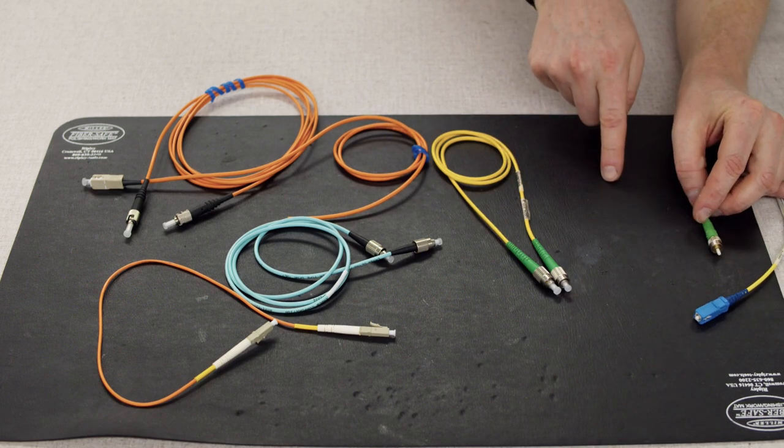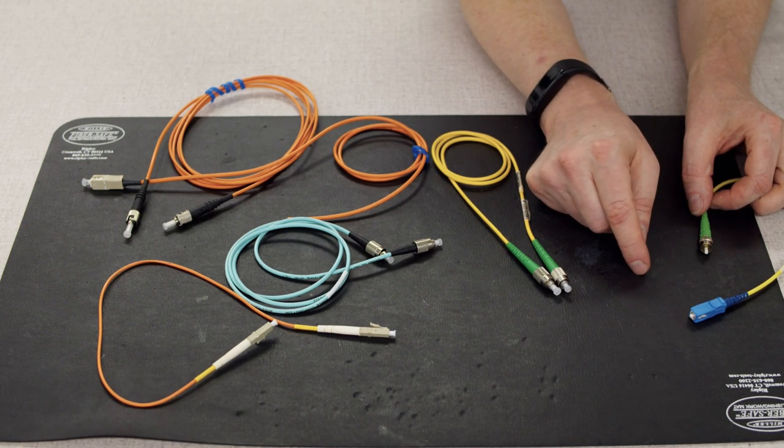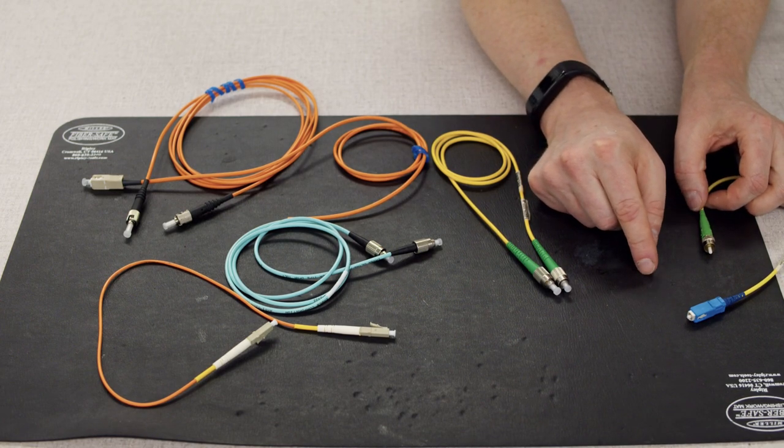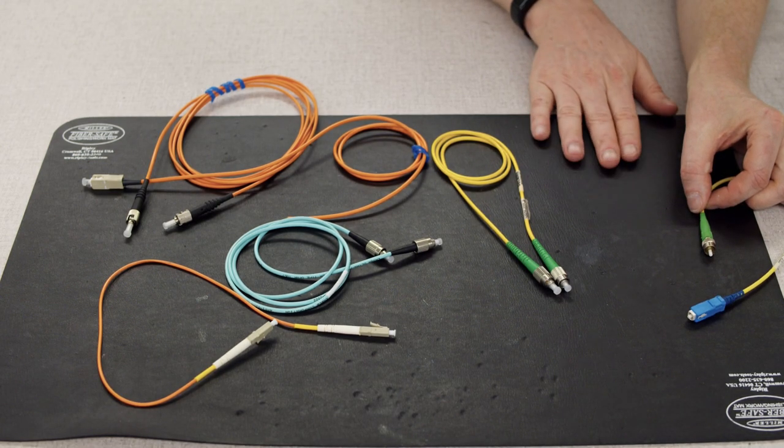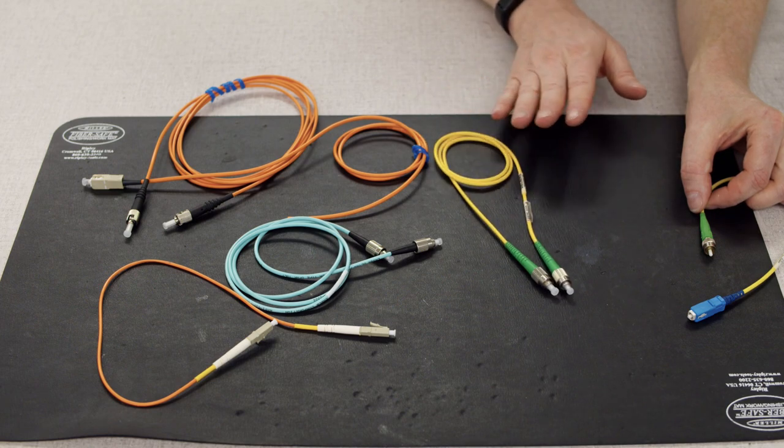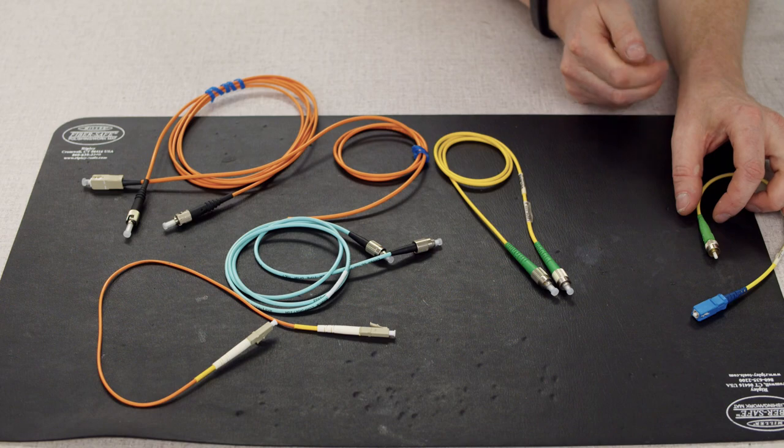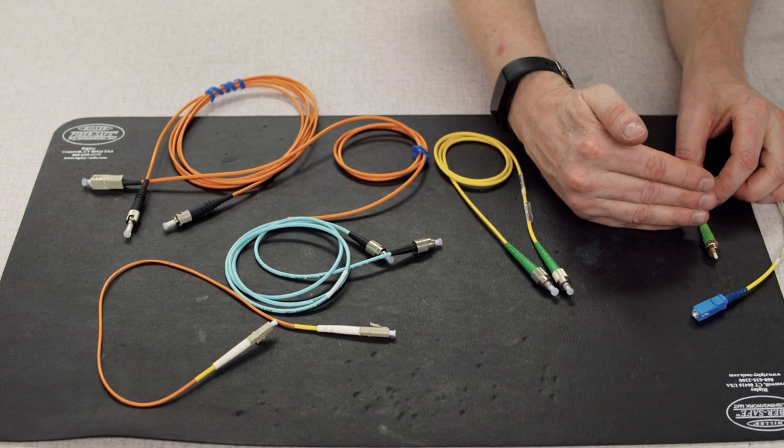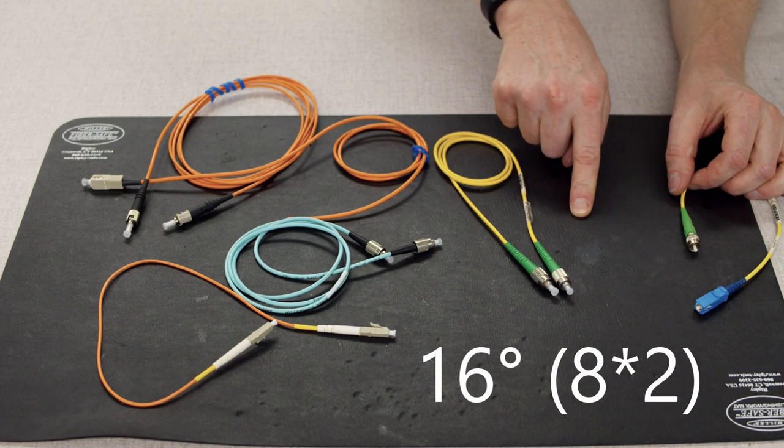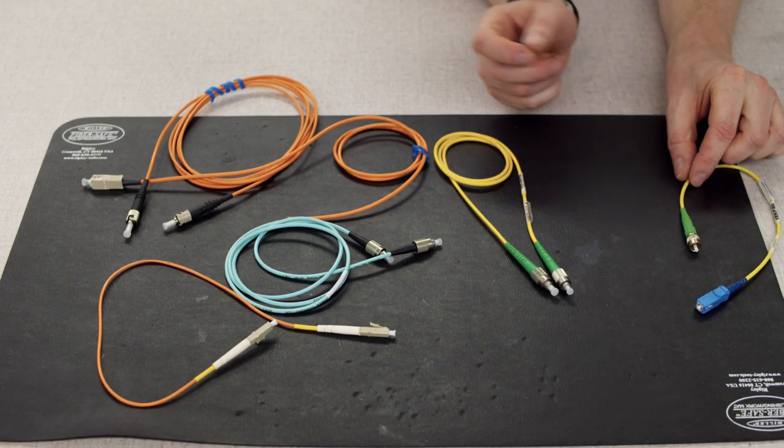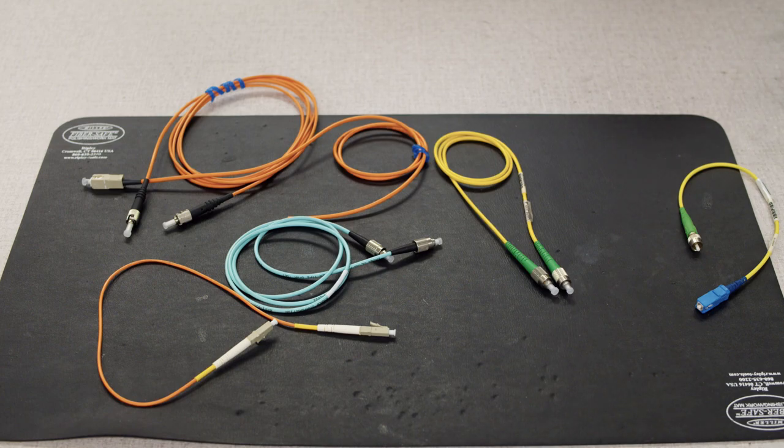So that is why you always see them attached to single mode cables because single mode cables are kind of by definition higher end cables. So now you're probably wondering so what is green. Green signifies that the end face of the connector actually sits at an eight degree angle. So I'll throw up a little graphic here so you can see it better but yeah instead of sitting flat like this it's actually tilted off at eight degrees. And that's purposefully done in order to cut down on back reflection.